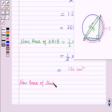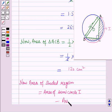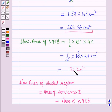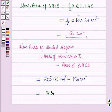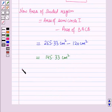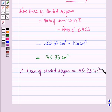The area of the shaded region equals the area of semicircle minus the area of triangle ACB. Putting these values: 265.33 cm squared minus 120 cm squared equals 145.33 cm squared. Therefore, the area of the shaded region is equal to 145.33 cm squared. This is the solution of the given question, and that's all for this session. Hope you all have enjoyed the session.